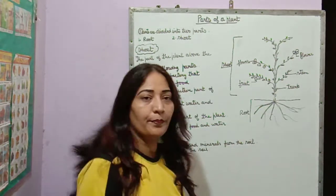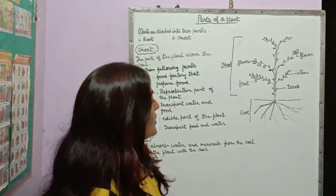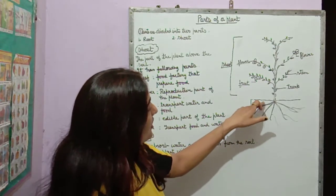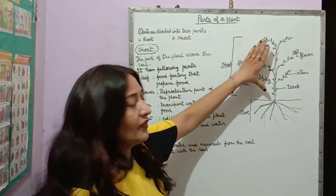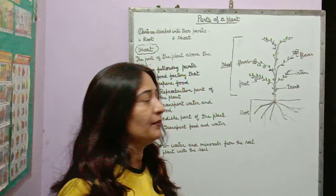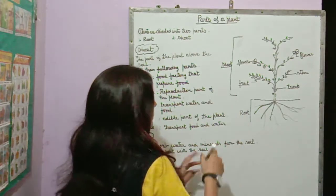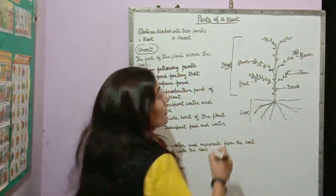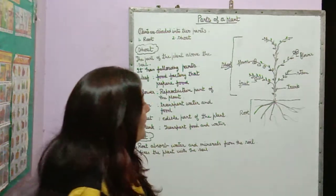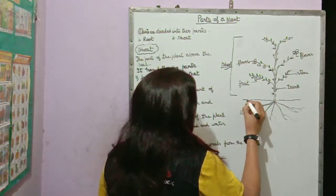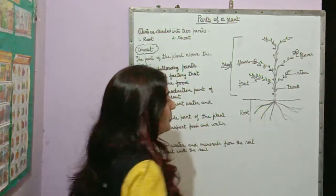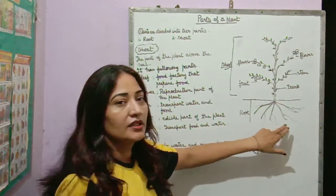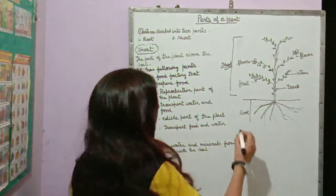This is the picture of a plant. The part which is visible — the part which is visible above the ground — that is called shoot or shoot system. The part which is in the soil or under the ground, that is called root.